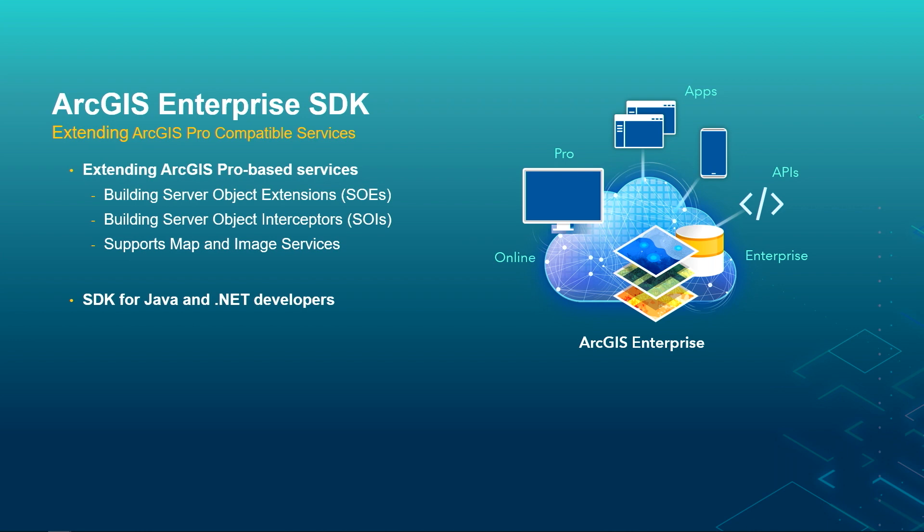The Enterprise SDK is for extending ArcGIS Pro-based compatible services — you can build SOEs and SOIs for both .NET and Java. If you've been using services published from ArcMap with the ArcObjects SDK, you should strongly consider migrating to the Enterprise SDK. ArcGIS Enterprise will begin providing an optional install to continue supporting ArcMap-based services at the end of 2021, but by default the Enterprise SDK will be the recommended SDK. Please consider migrating as soon as your Enterprise will allow it.